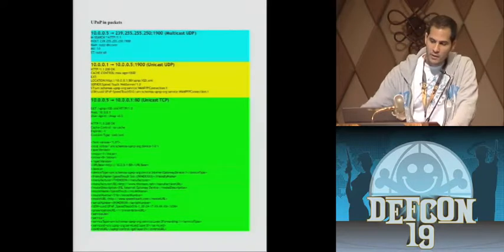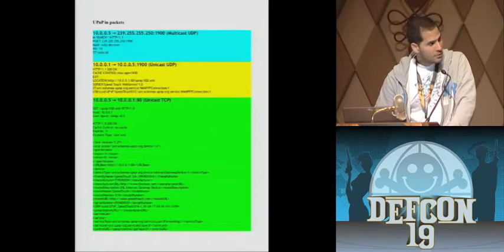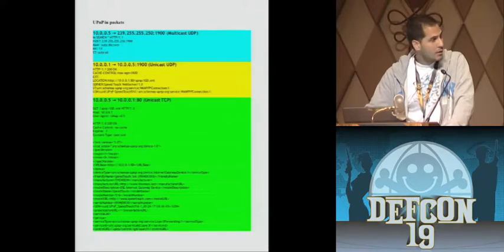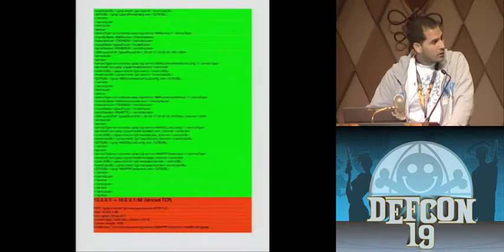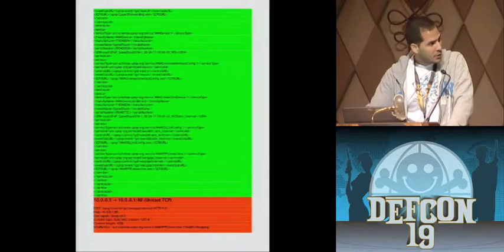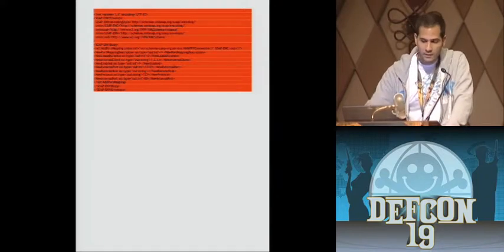After you get that unicast reply — the blue part — you get to the green part, which is unicast TCP. Basically it's SOAP requests. After you get the SOAP request and the XML description of the device, you send a SOAP request that maps a port. Arguments include lease duration, internal client, external port, and remote host — your basic port mapping arguments.